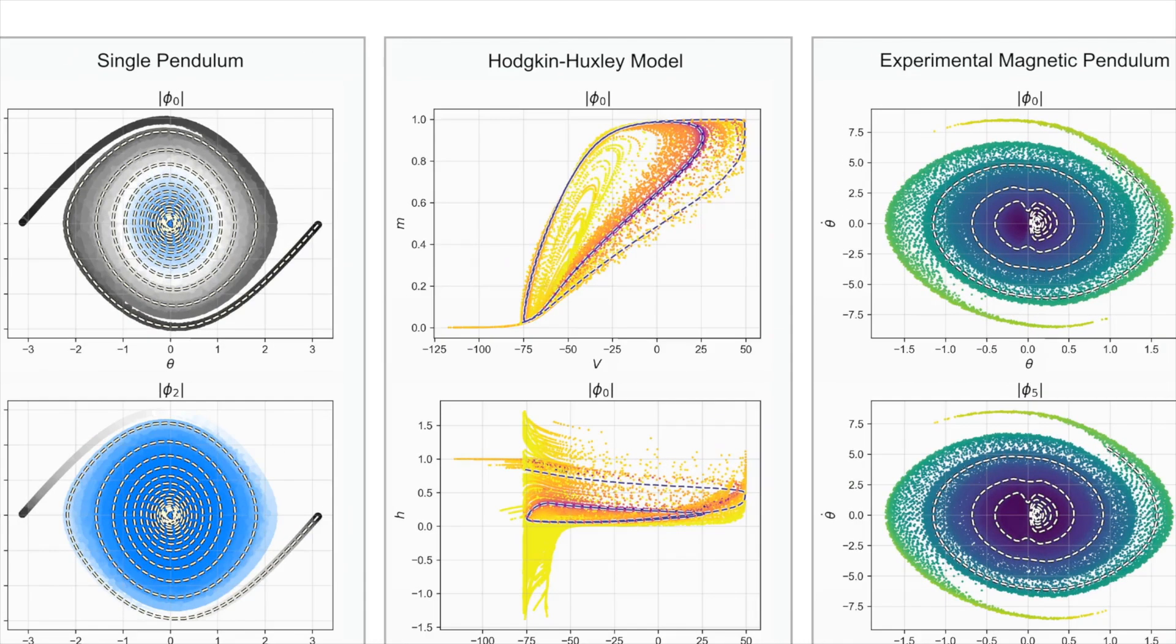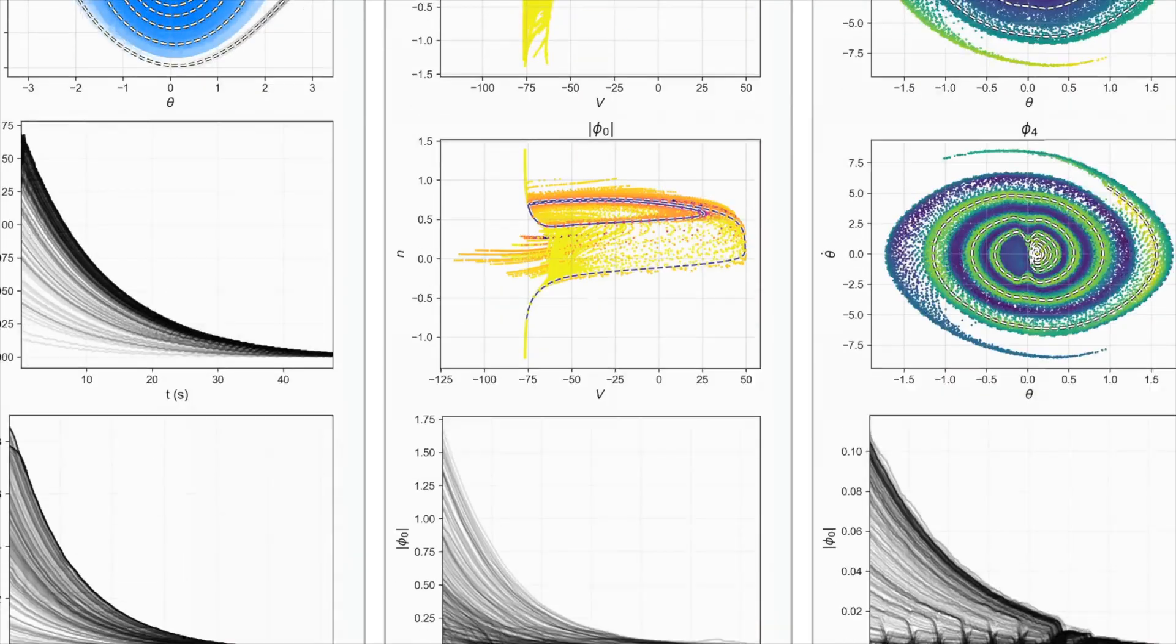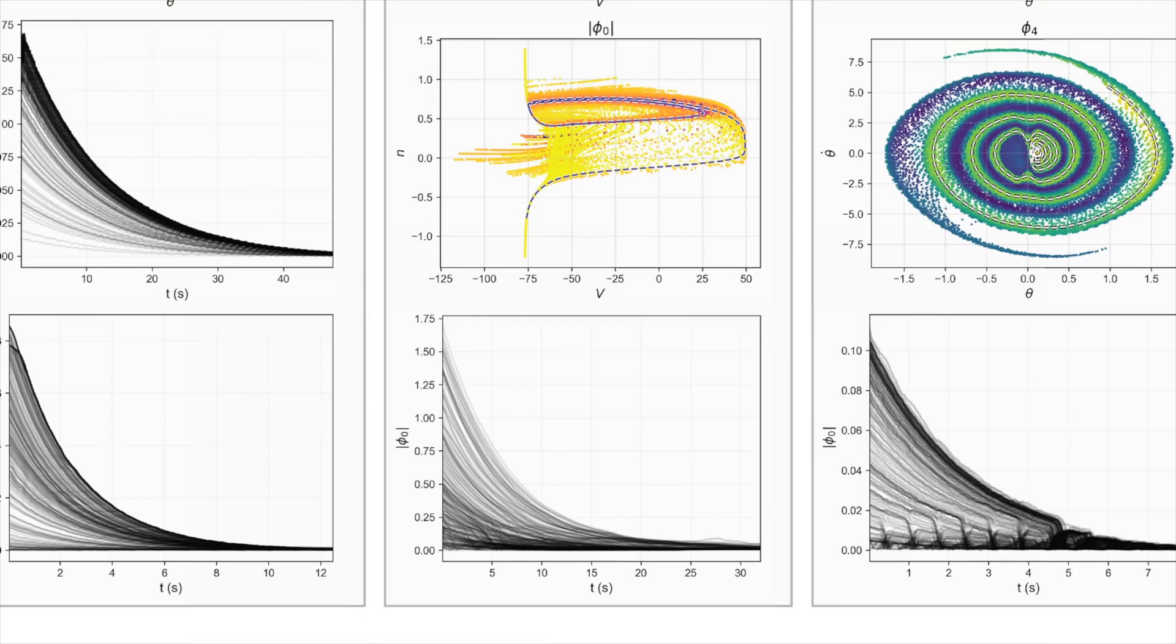Again, we can verify this Lyapunov function using trajectories from the dataset. Lastly, due to the complicated analytical form of the Hodgkin-Huxley equations, an analytical form for this Lyapunov function has yet to be produced.